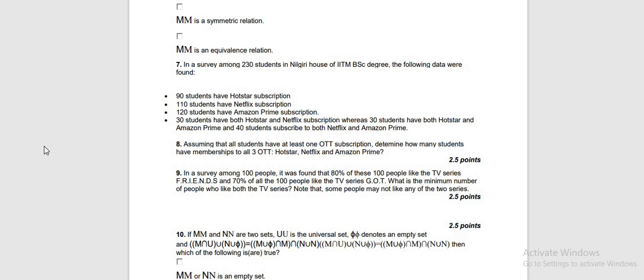Question number 7 says that in a survey among 230 students in Nilkeri house of IAP and BSc degree, the following data was found: 90 students have Hotstar subscription, 110 students have Netflix subscription, 120 students have Amazon Prime subscription, 30 have both Hotstar and Netflix, 30 have Hotstar and Amazon Prime, and 40 students subscribe to both Netflix and Amazon Prime. The question asks us, assuming all students have at least one subscription, how many students have subscribed to all three — Hotstar, Netflix, and Amazon Prime.